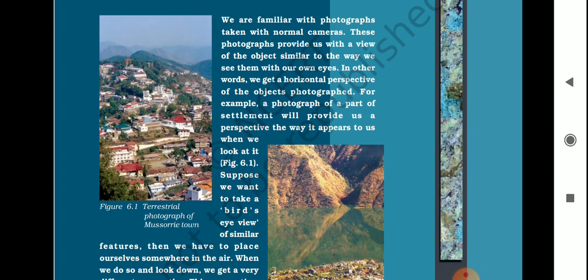If we want to take a bird's eye view of a similar feature, we have to place ourselves somewhere in the air. When we do so and look down, we get a very different picture. This picture we get through aerial photographs — and this is called aerial photography.